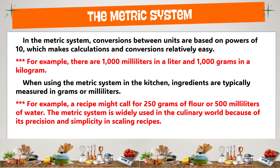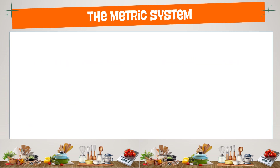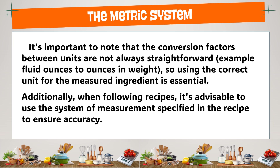For example, there are 1000 milliliters in a liter and 1000 grams in a kilogram. When using the metric system in the kitchen, ingredients are typically measured in grams or milliliters — a recipe might call for 250 grams of flour or 500 milliliters of water. The metric system is widely used in the culinary world because of its precision and simplicity in scaling recipes. Note that conversion factors are not always straightforward, so using the correct unit for each ingredient is essential. When following recipes, use the system of measurement specified to ensure accuracy.